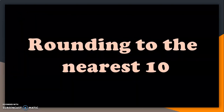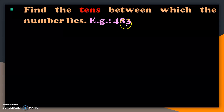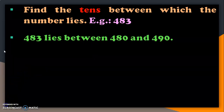First, rounding to the nearest ten. The method to do this is: find the tens between which the number lies. I have taken the example of a three-digit number 483. As we have to round off to the nearest ten, look at the tens place — we have 8. And 83 is the number which lies between 80 and 90. So, 483 lies between 480 and 490. In class 4, you would have used the method of number lines to find out the number which is closer to 483.